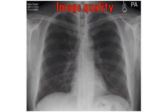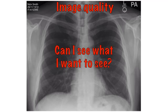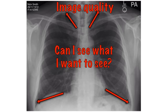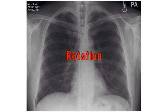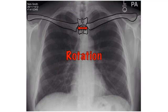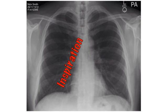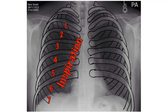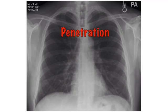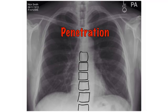In terms of image quality, ask yourself if you can see everything you need to in the picture. Then check three aspects using the mnemonic RIP. R is rotation — the spinous process should be at the midpoint between the medial ends of the clavicles. I is inspiration — there should be five to seven ribs visible anteriorly. P is penetration — the degree to which X-rays have passed through the body. Is the spine visible behind the heart?